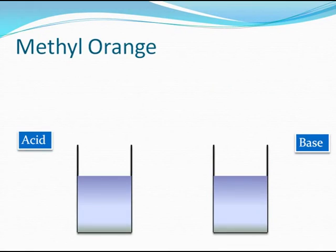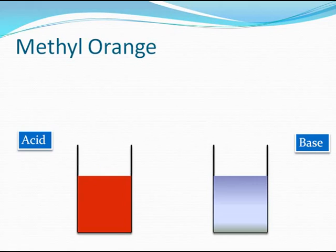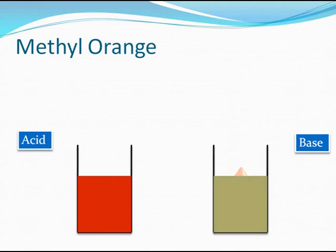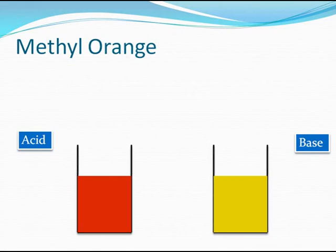Another common indicator is methyl orange. Methyl orange is orange in color in neutral solutions. When one drop of methyl orange is added to an acid, the solution turns red. On the other hand, when one drop is added to a base, the solution turns yellow. So methyl orange turns yellow in bases and red in acids — this is a very important indicator.